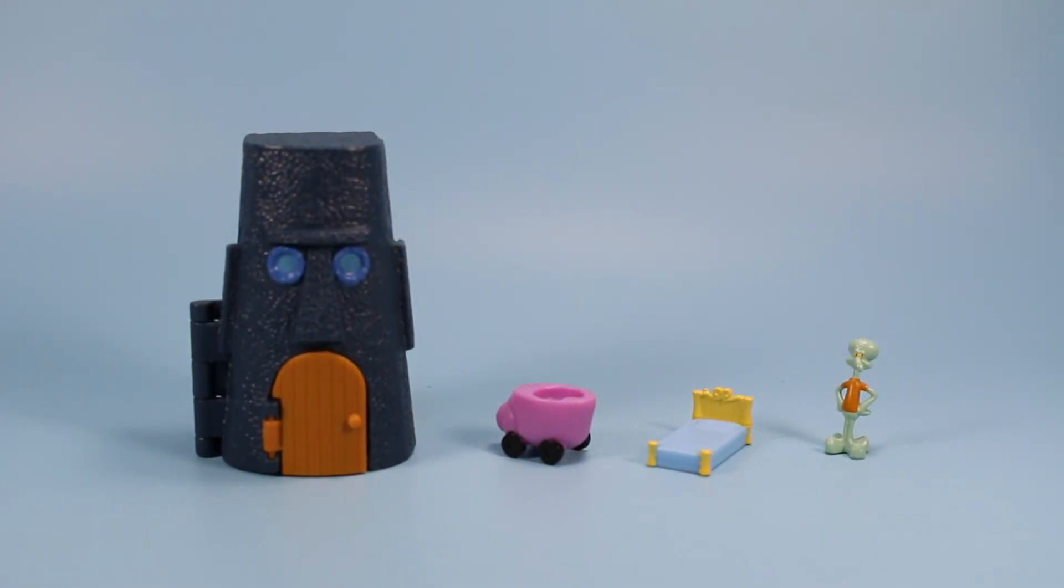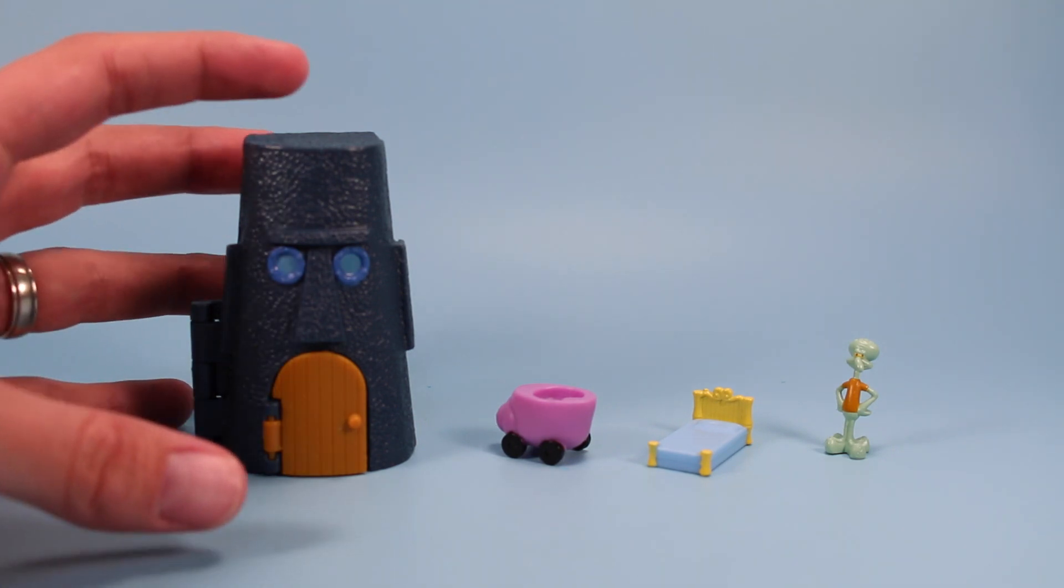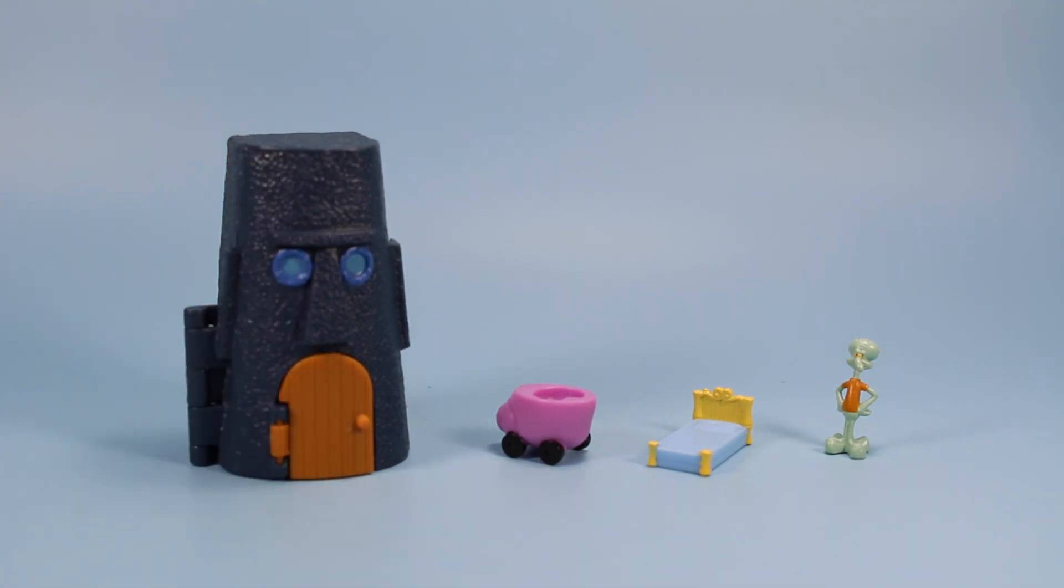Now it's time to marvel at the beautiful pieces of Squidward's house mini playset. Four beautiful pieces to enjoy and live in for a lifetime of entertaining. We have the main Squidward house structure fancied after the great heads of Easter Island, a pink conch car for Squidward, a bed, and of course, Squidward minifigure.